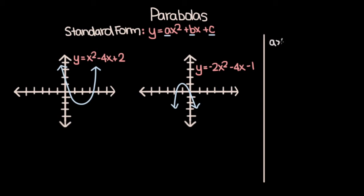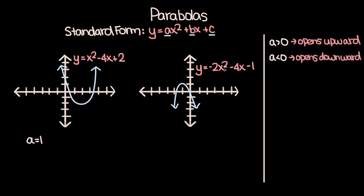If a is positive — that is, if a is greater than zero — then the parabola opens upward. For example, if we consider the parabola on the left, a, which is the coefficient of the x squared term, is 1, and 1 is positive, so the parabola opens upward. In the other case, where a is negative — that is, where a is less than zero — the parabola opens downward. That's what we see with the parabola on the right: a is negative 2, which is less than zero, so the parabola opens downward.